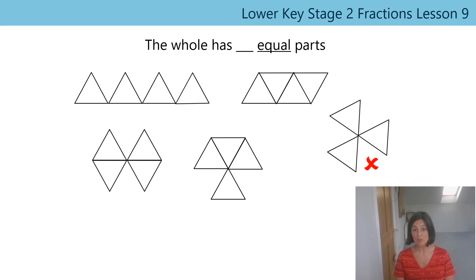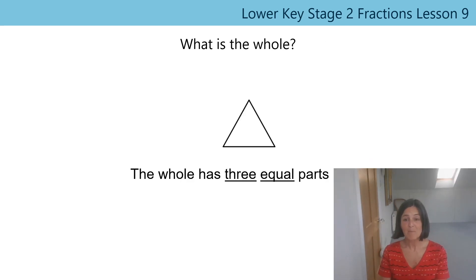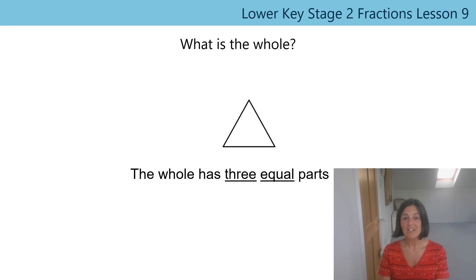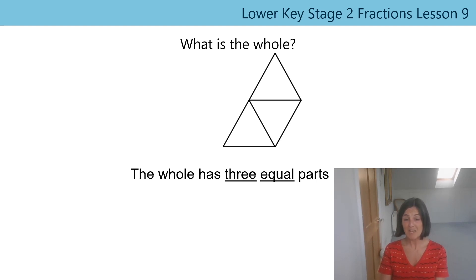So this time the triangle is a part of a whole that has three equal parts, and I'd like you to see if you can draw what you think that whole is going to look like. Pause the video while you're drawing, then show it to someone in your house if they're available, or alternatively show it to your teddy, and then start the video again. This is what I drew — does your whole look anything like mine? It might look different, it might look the same, but the way we can check it's correct is to use our sentence: the whole has three equal parts. Excellent!